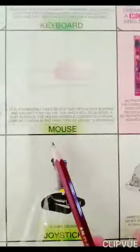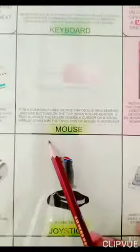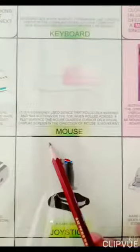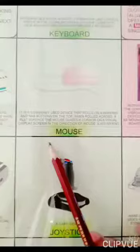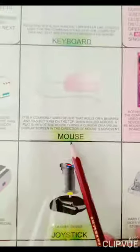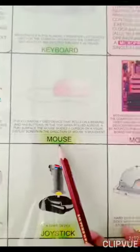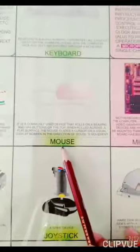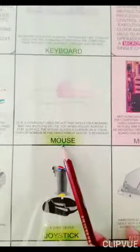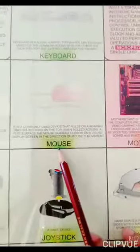Next is mouse. Mouse is also an input device because it is used to enter data into the computer. Mouse has two buttons — left and right — and a scroll wheel in the middle.